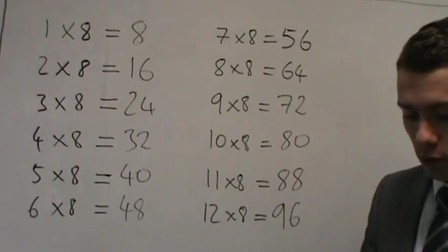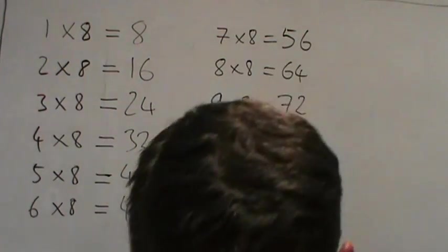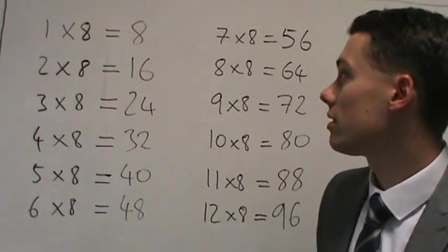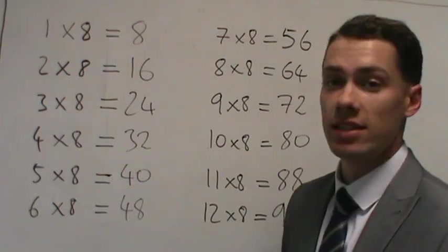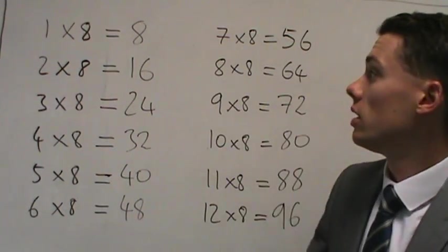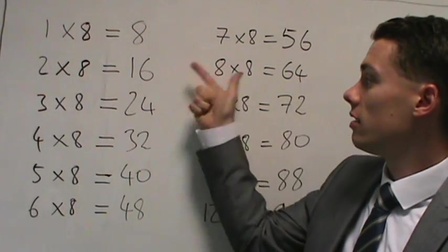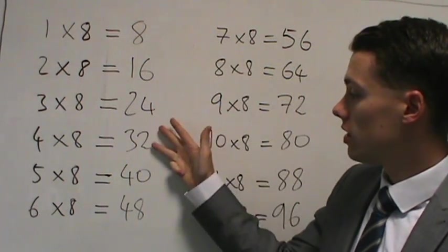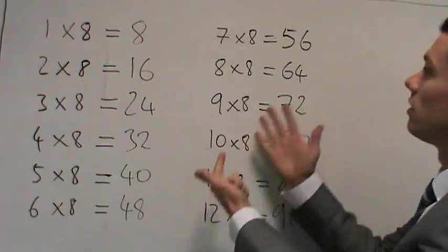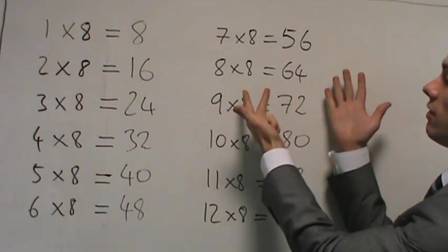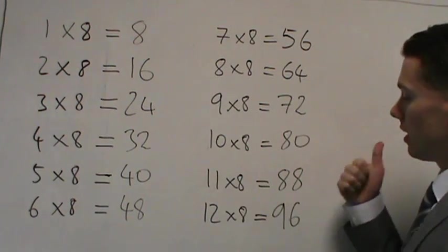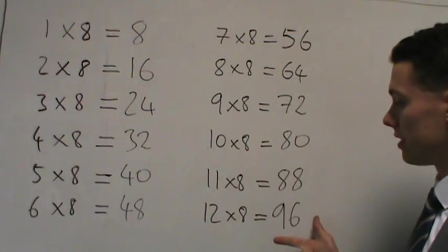So we'll go through it once more together. And it'll be really helpful for you if you can use your hands and also say along with me as I say these to you. So 8, 16, 24, 32, 40, 48, 56, 64, 72, 80, 88 and 96.